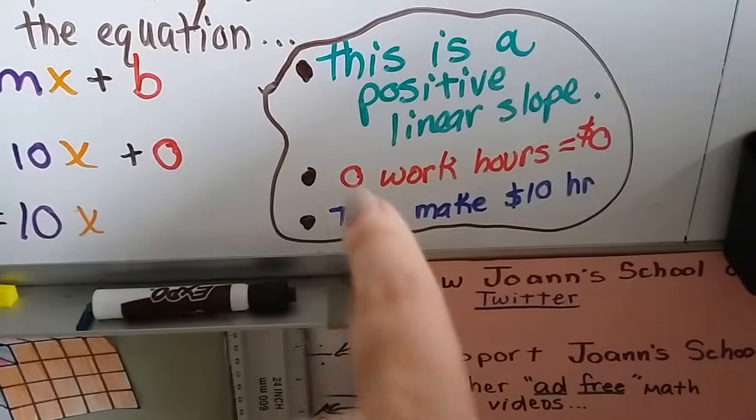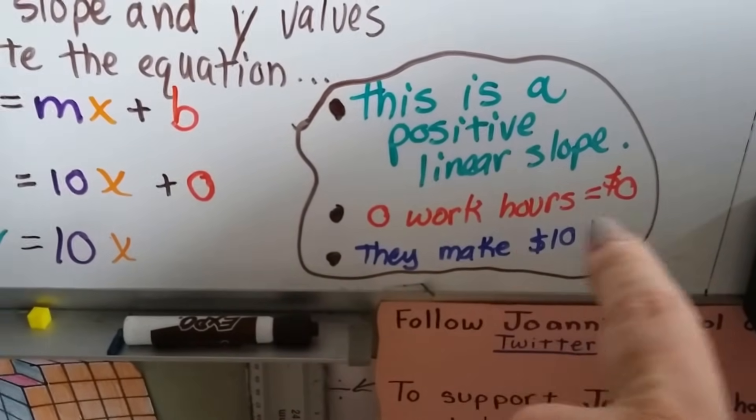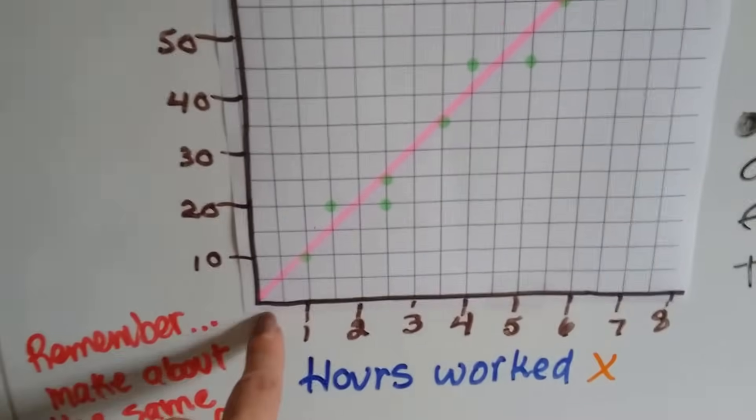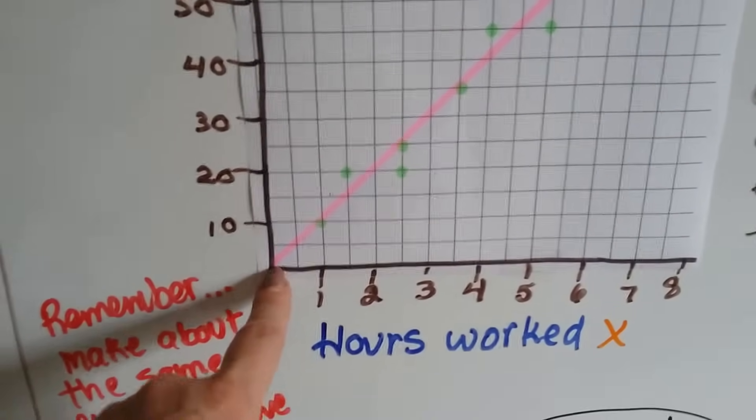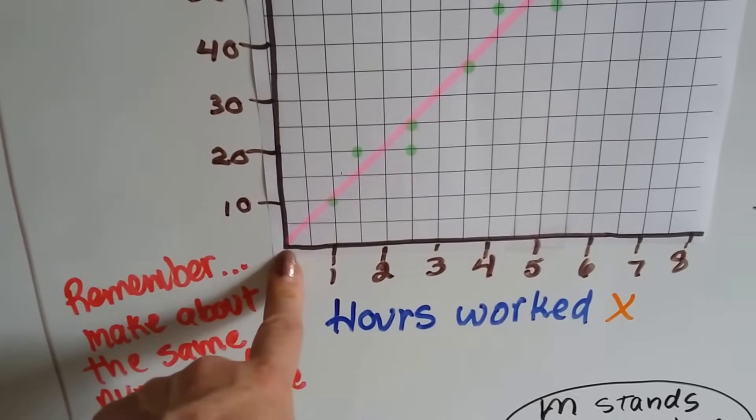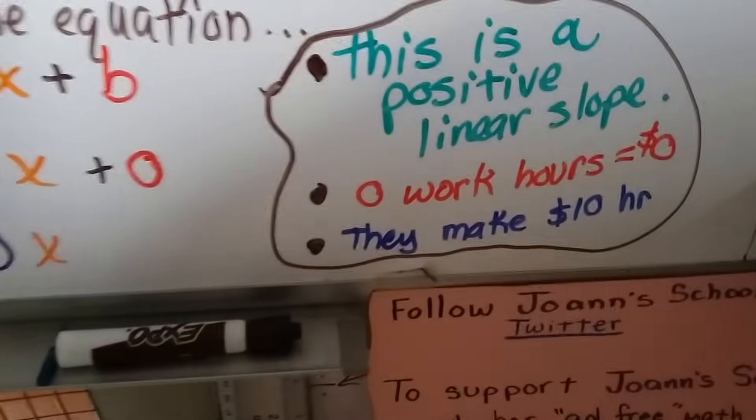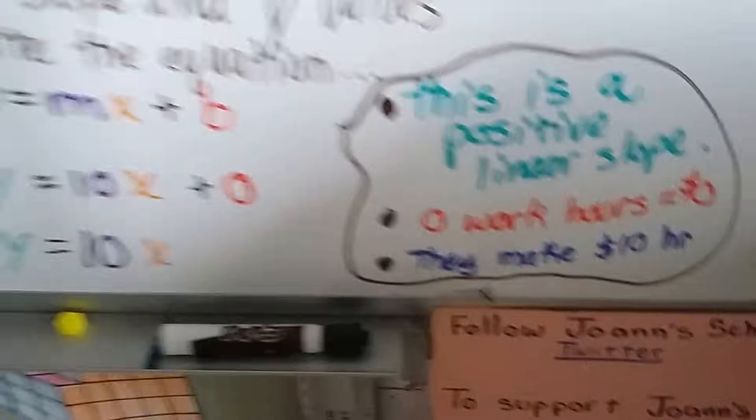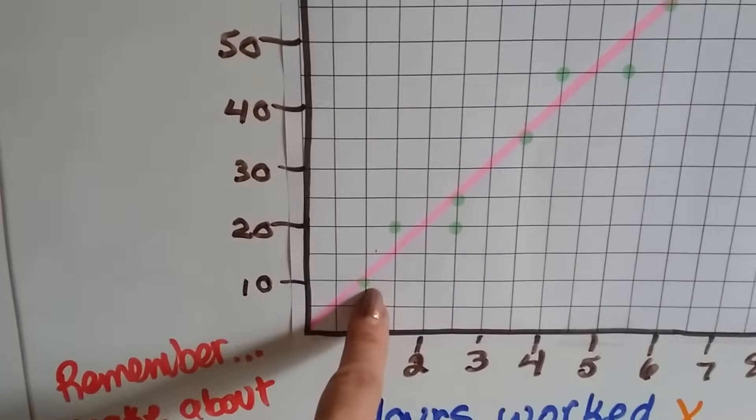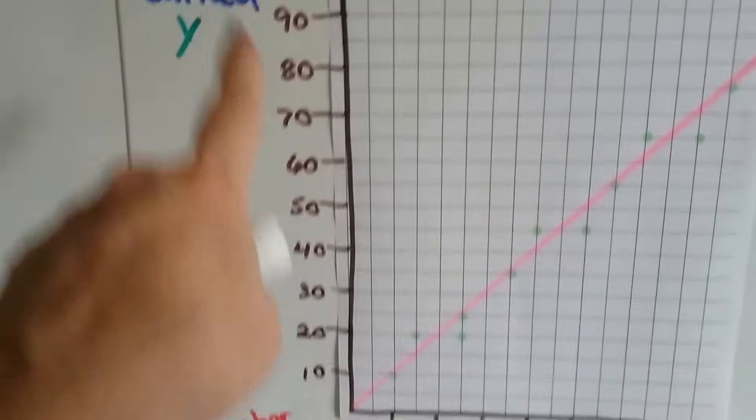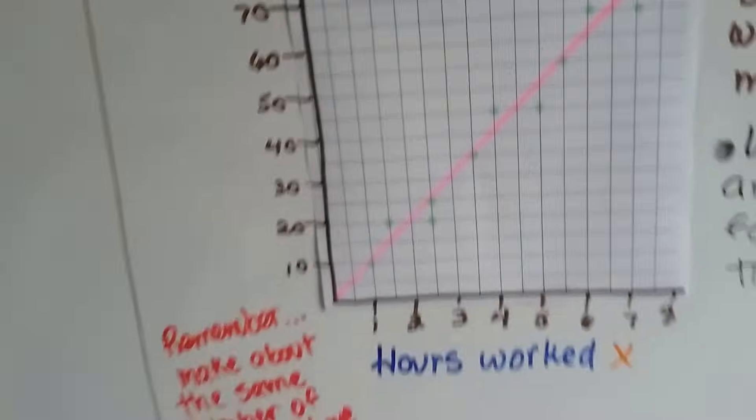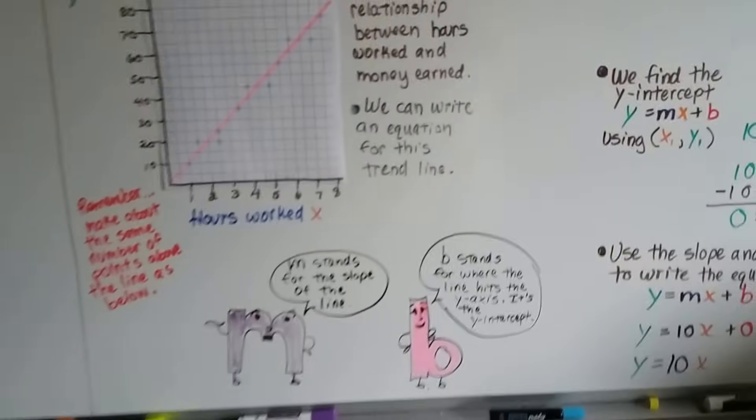And, we can see that 0 work hours equals 0 dollars. Here's 0 for the x-axis and 0 for the y-axis. You do 0 work. You get 0 dollars. See? It went right through the origin. 0, 0. And, we can tell how much they make per hour. They make $10 an hour. You know how we know? Look it. 1 hour of work is 10. And, that's the money earned in dollars. So, we found out all of those things.